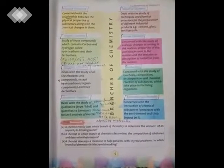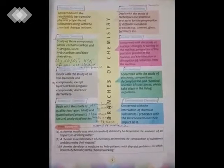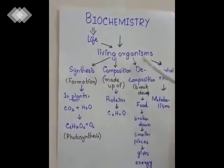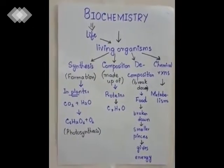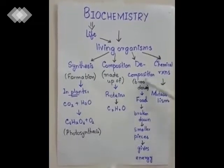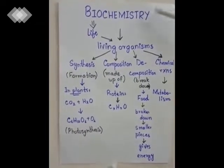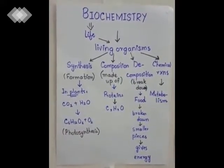After nuclear chemistry, we discuss the seventh branch: biochemistry. Biochemistry is concerned with the study of synthesis, composition, decomposition, and chemical reactions of substances which take place in living organisms. The word 'bio' means life, so biochemistry is the chemistry involved in living organisms. Synthesis means formation — for example, in plants during photosynthesis, glucose is formed.